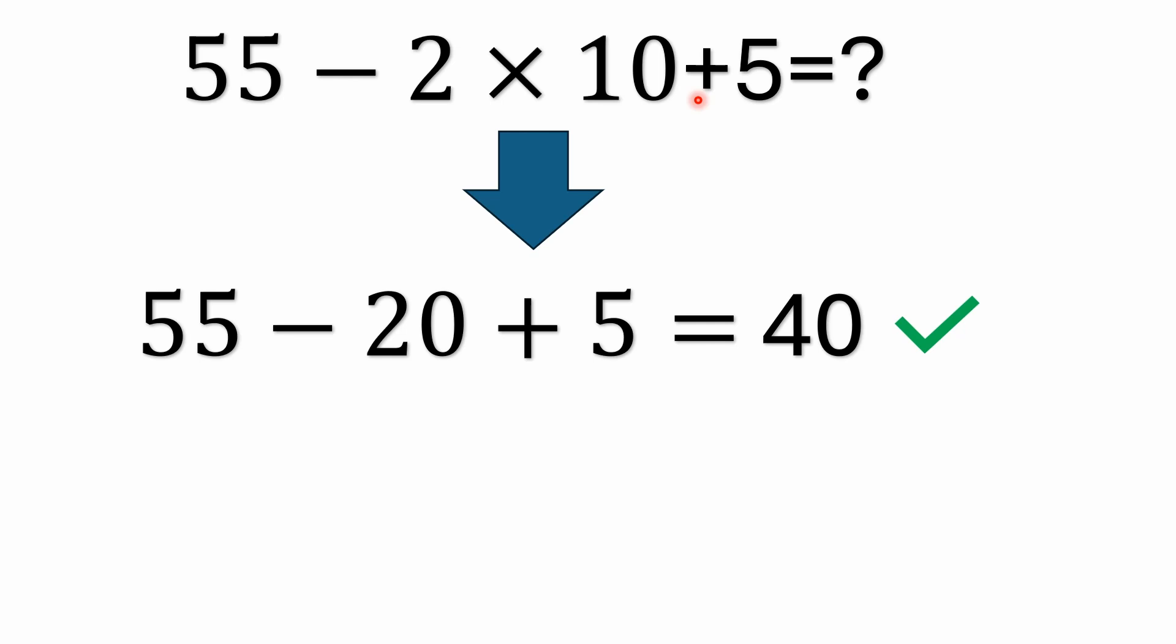All right so first of all hopefully you do remember your order of operations. Multiplication has always had precedence over addition and subtraction. I know I'm going to hear a lot of people saying well the 2 times 10 isn't in brackets, the 2 times 10 is not in parentheses. So you just go left to right and that is false. Multiplication already has precedence over addition and subtraction. That's always been true.